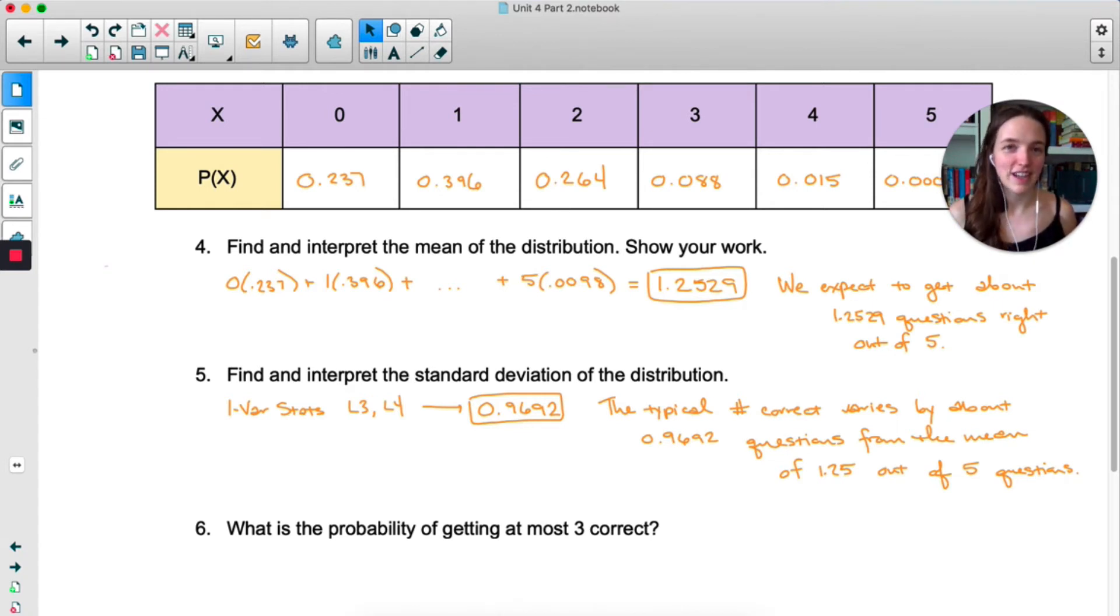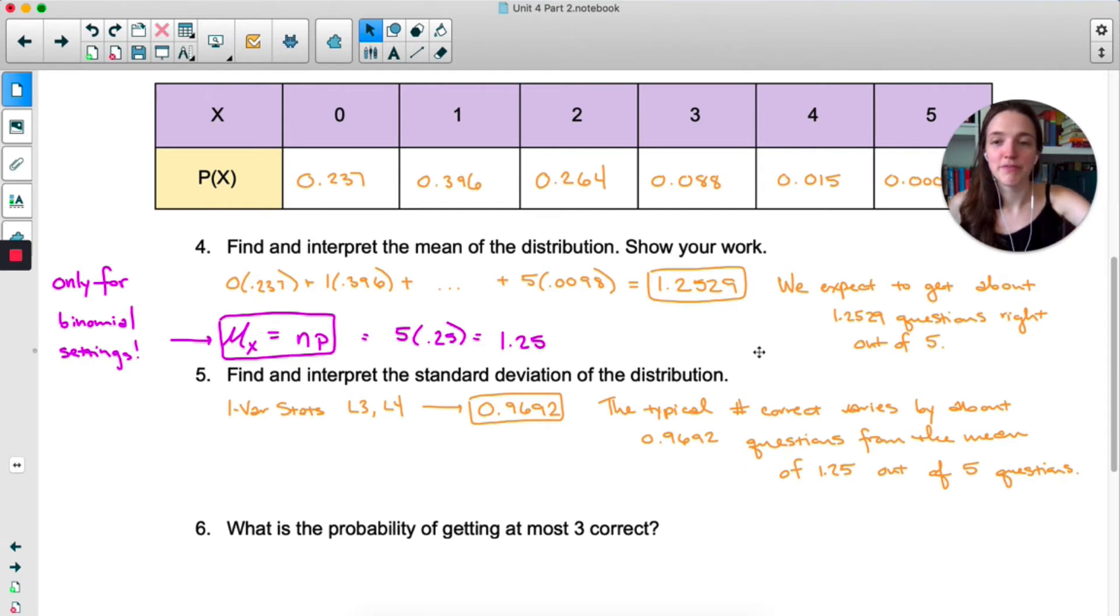All right, now as promised, more shortcuts. When you have a binomial distribution, there is a shortcut for calculating mean. Mu, or the mean of x is just n times p. In this case, that's 5 times 0.25, we get 1.25. That's always true if you have a binomial distribution.